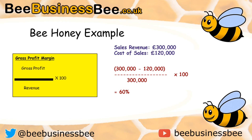In that question you should have first calculated your gross profit: revenue of £300,000 minus £120,000 gives you your gross profit. You then divide that by your revenue figure of £300,000 and multiply by 100, giving you a gross profit percentage of 60%. We'll look at whether that's good or bad in more detail shortly.